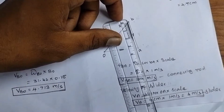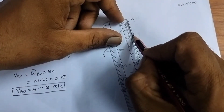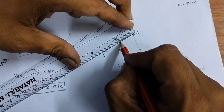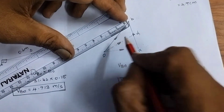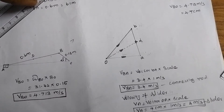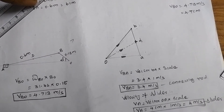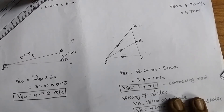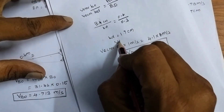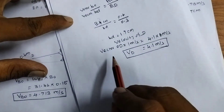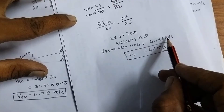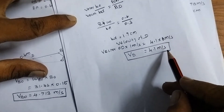In the velocity diagram, the midpoint D of the connecting rod is located by taking half the length of BA in the velocity polygon. The length is 1.7 m, giving point D. Connecting O to D gives the velocity of point D. The velocity of point D, measured as vector O to D, is 4.1 m/s.